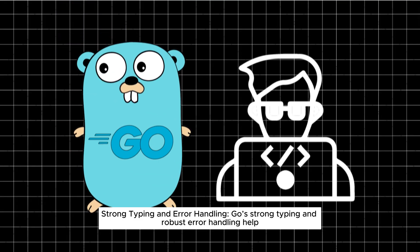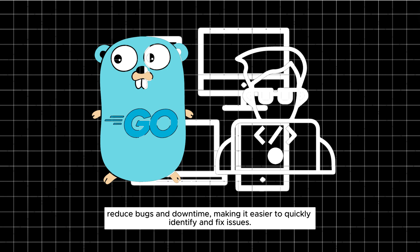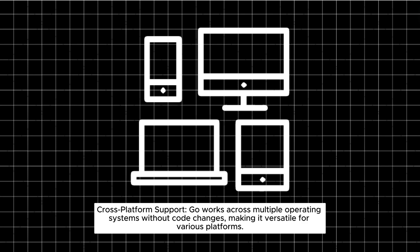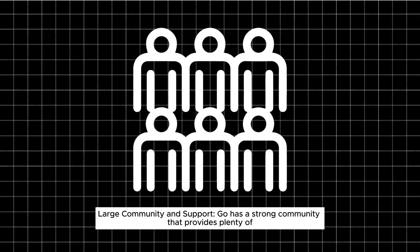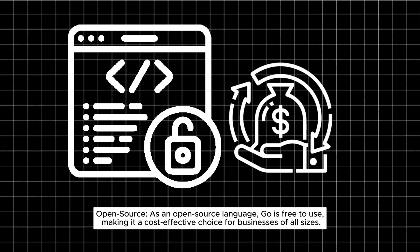Strong typing and error handling: Go's strong typing and robust error handling help reduce bugs and downtime, making it easier to quickly identify and fix issues. Cross-platform support: Go works across multiple operating systems without code changes, making it versatile for various platforms. Large community and support: Go has a strong community providing plenty of resources. As an open source language, Go is free to use, making it a cost-effective choice for businesses of all sizes.